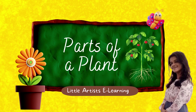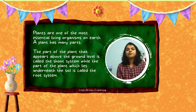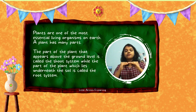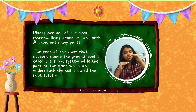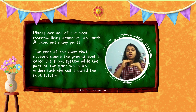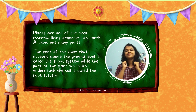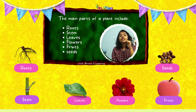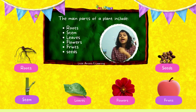Parts of a plant. Plants are one of the most essential living organisms on earth, and a plant has many parts. The part of the plant that appears above the ground level is called the shoot system, while the part of the plant which lies underneath the soil is called the root system. The main parts of a plant include roots, stem, leaves, flowers, fruits, and seeds.